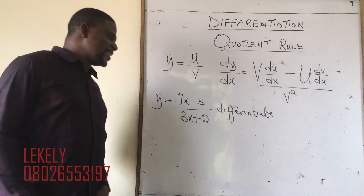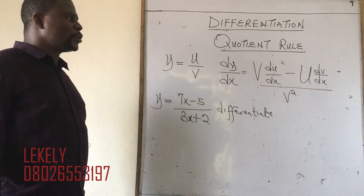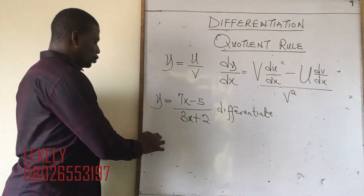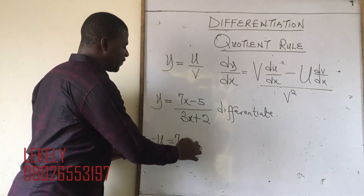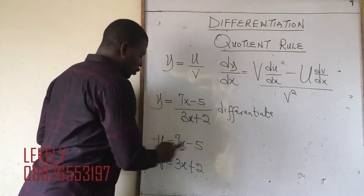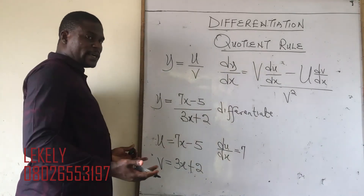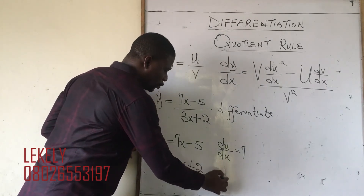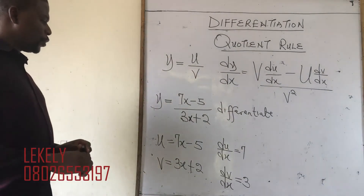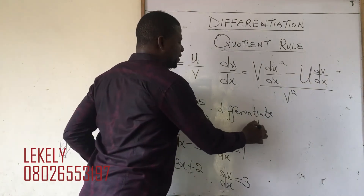The moment I see a question written as a fraction — something on top and something on the bottom — I know it is quotient rule. What you always do is call what you have on top u and the one on the bottom v. So u is 7x minus 5 and v is 3x plus 2. For du/dx: differentiating 7x gives 7, differentiating 5 gives zero.